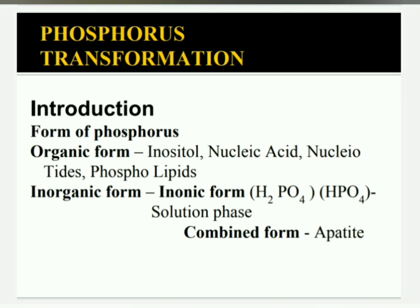Globally, 5.7 billion hectares of cultivated land is deficient in phosphorus for achieving optimal crop production.